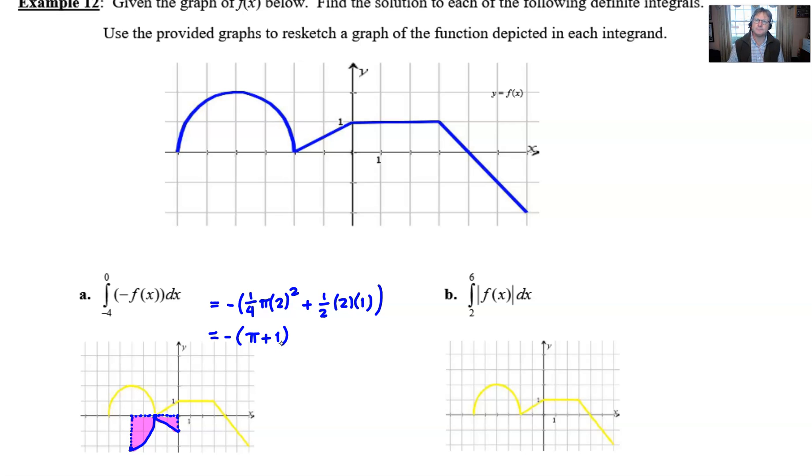In part B, we're taking the integration from 2 to 6 of the absolute value of f(x). The graphical effect that absolute values have is that any y value that's positive will stay positive, any y value that's negative will reflect above the x-axis. From 2 to about 4 we were already positive, so there's nothing that's going to change. But from 4 to 6, this little diagonal segment here is going to reflect above the x-axis as such.